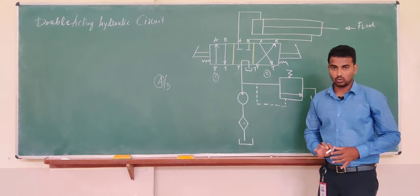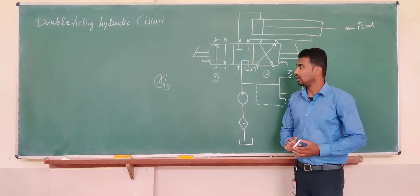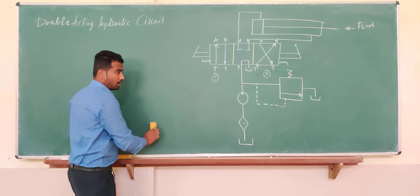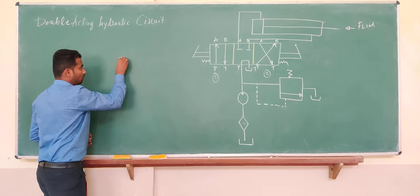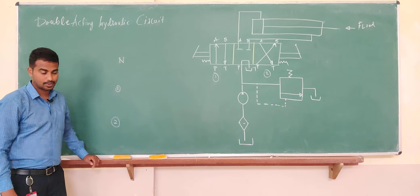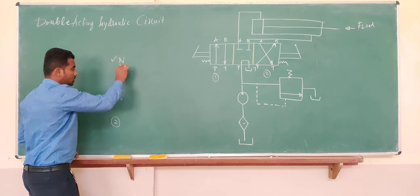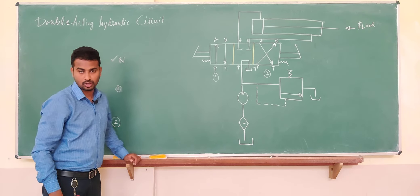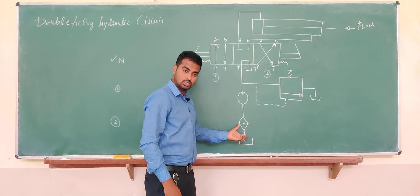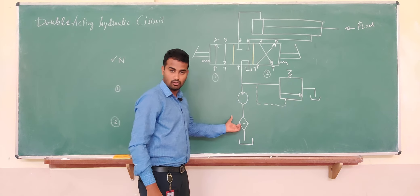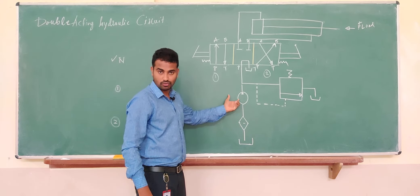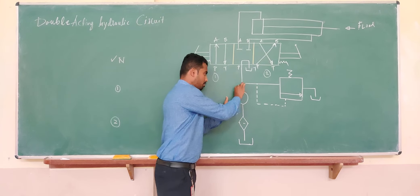Now I will explain how this hydraulic circuit works, dividing the explanation into three parts: when we switch to the neutral position, when we switch to the first position, and when we switch to the second position. First, let's see what happens when we switch the directional control valve to the neutral position. As soon as you start the pump, suction happens — fluid starts entering the pump through the filter where filtration is done, and then it enters the pump.